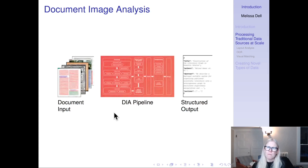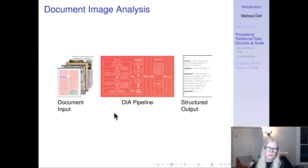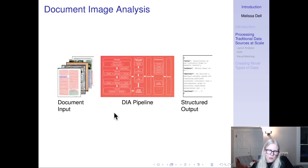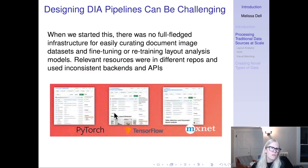Stepping back more generally, this is an example of document image analysis. We have document inputs, then some kind of pipeline, and we want to produce structured output that you can import into statistical software for downstream economic analyses. When I started working on this, there was really no full-fledged infrastructure for easily curating document image datasets and fine-tuning or retraining models to recognize the layouts of these documents.